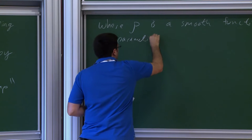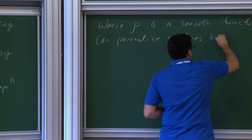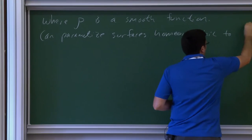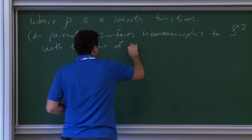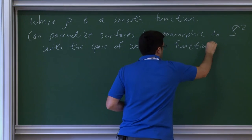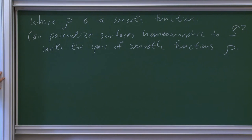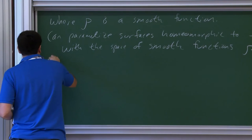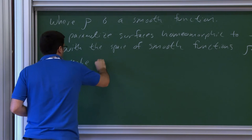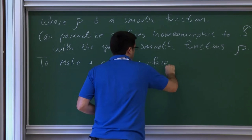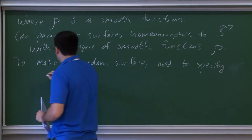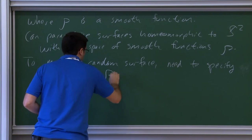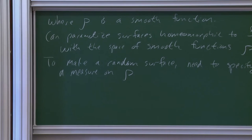This tells you that you can parameterize the space of surfaces homeomorphic to the sphere in terms of the space of smooth functions. Now if you want to use this as a starting point to develop a theory of random surfaces, what you need to do is put a measure on ρ. To make a random surface, you need to specify a probability measure on functions ρ. Once you've done that, you've specified a probability measure on surfaces.